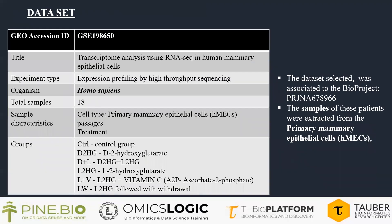The first step of extracting data was done from the NCBI-GEO dataset. The title of the dataset was transcriptome analysis using RNA-seq in human mammary epithelial cells. The dataset has a total of 18 samples, further divided into 6 groups based on the treatment they underwent.